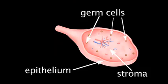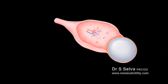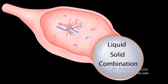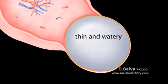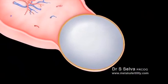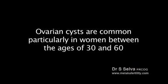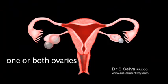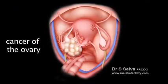Cysts can form from any part of the ovary. An ovarian cyst is a sack or pouch that develops in the ovary. The cysts may contain liquid or solid material or a combination of both. The fluid within the cysts can range from thin and watery to thick and paste-like. The wall that covers the cysts can be thin or thick. Ovarian cysts are very common, particularly in women between the ages of 30 and 60. They may be single or multiple and can occur in one or both ovaries. Most are benign but a small percentage are cancerous.